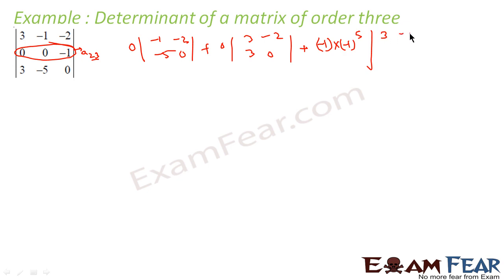These we are not much bothered because 0 into some value will become 0 only. So the output will be 0 plus 0 plus this minus 1 into minus 1 to minus 1 is again 1. Multiply the number diagonals: 3 into minus 5, subtract with the remaining number 3 into minus 1, correct. So this is nothing but minus 15 plus 3, and that is nothing but minus 12.